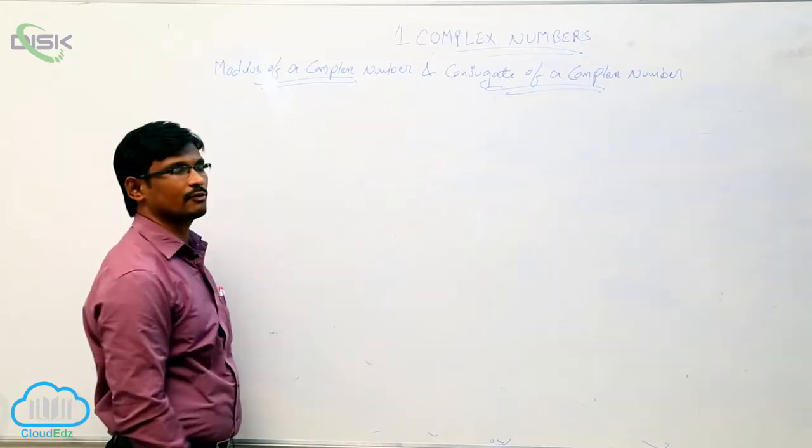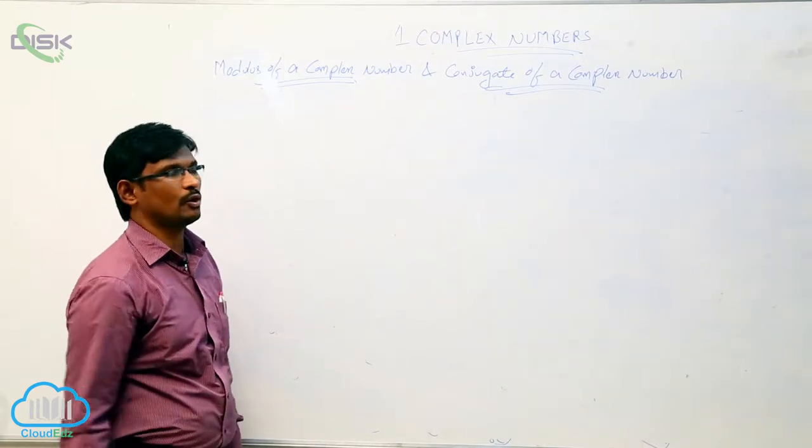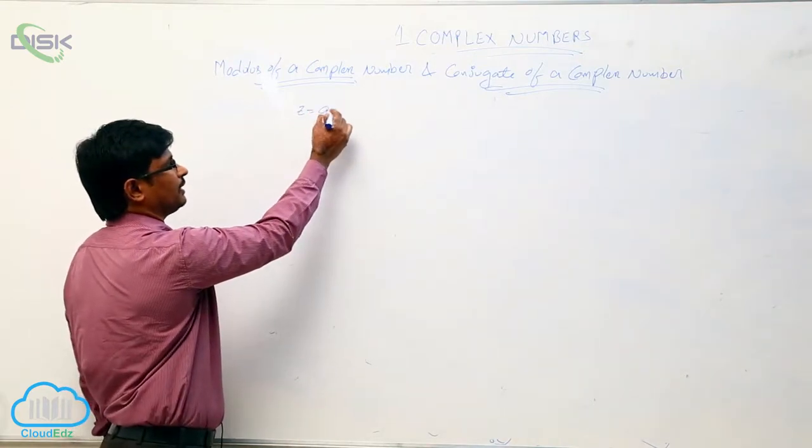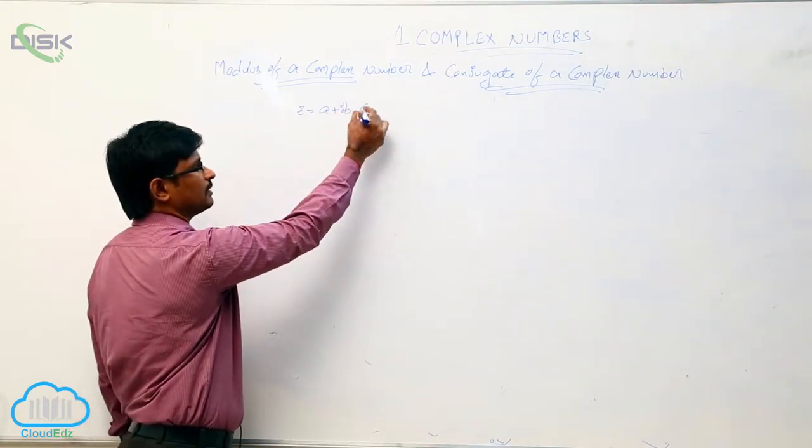Now we will see what is modulus of complex number and what is a conjugate of a complex number. Let z equal to a plus ib be one complex number.